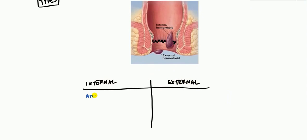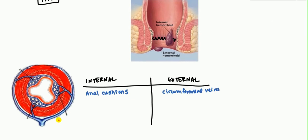The veins involved are important. In the internal area, we have structures called anal cushions; in the external area, we have circumferential veins. In the diagram of the blood supply, you can see three plexuses — these are the anal cushions found in the internal canal — and the circumferential vein is found in the external area. These are the major sites of pathology when discussing hemorrhoids.